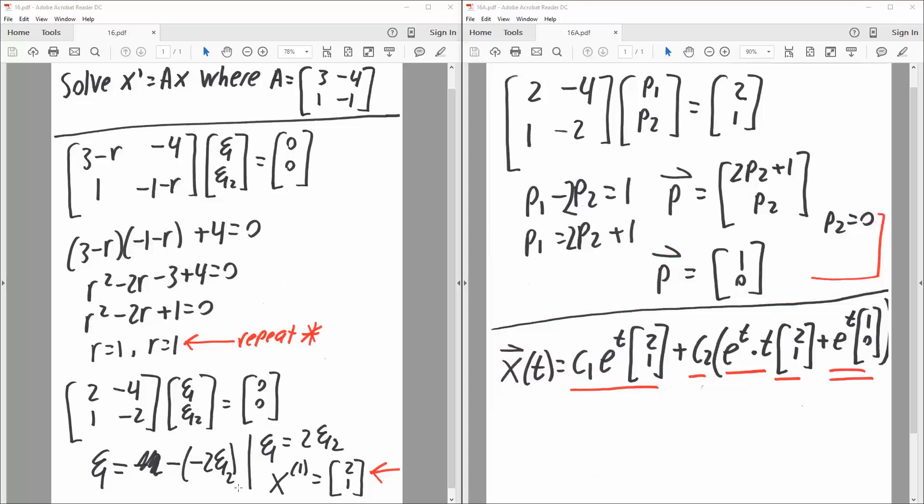And so we will group the negative 3 and plus 4, and so we would get r squared minus 2r plus 1 is equal to 0. We can say r minus 1 squared, so we would have r equals 1, or r equals 1. It repeats.